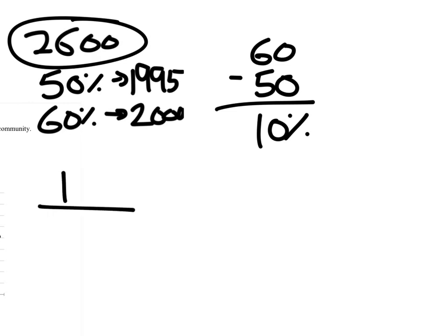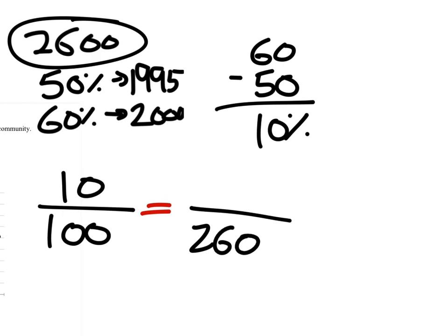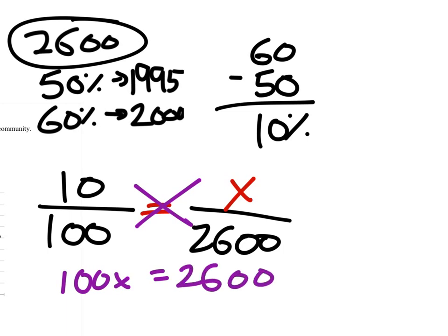You can use a percent proportion—I recommend it, but some of you guys hate it, and that's okay. You just multiply 2,600 by 0.1. So 10 over 100 equals X over 2,600. This gives me my cross-multiplication: 100X equals 26,000. And then we divide both sides by 100.